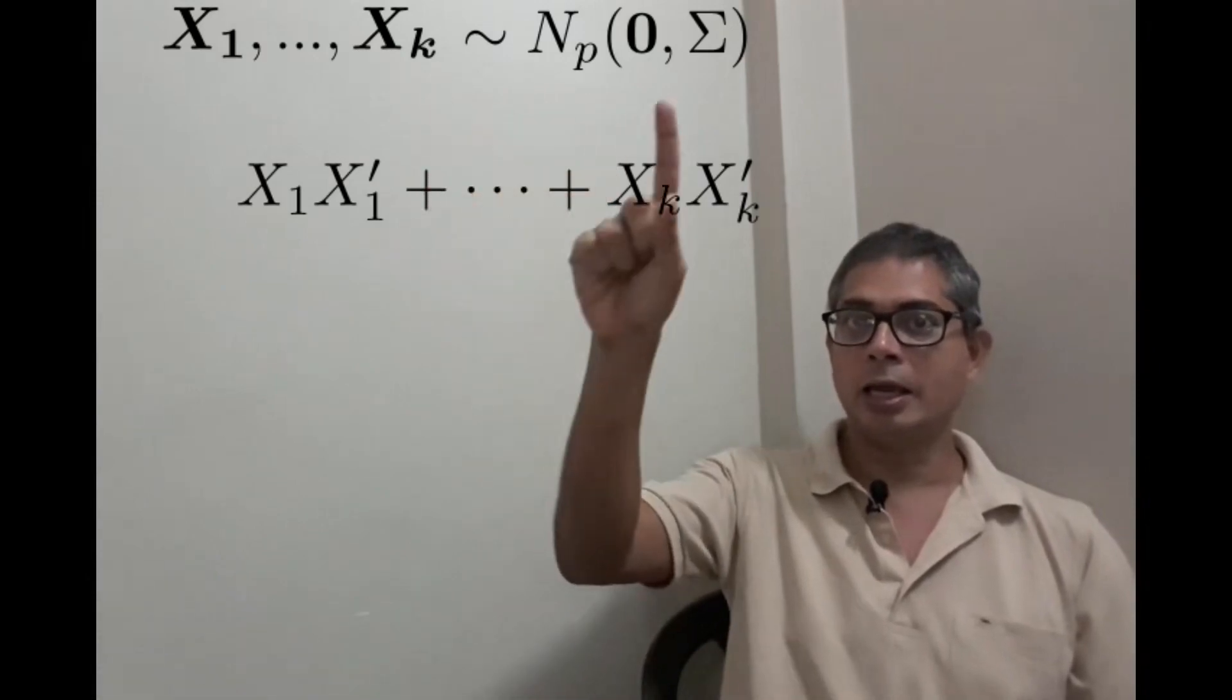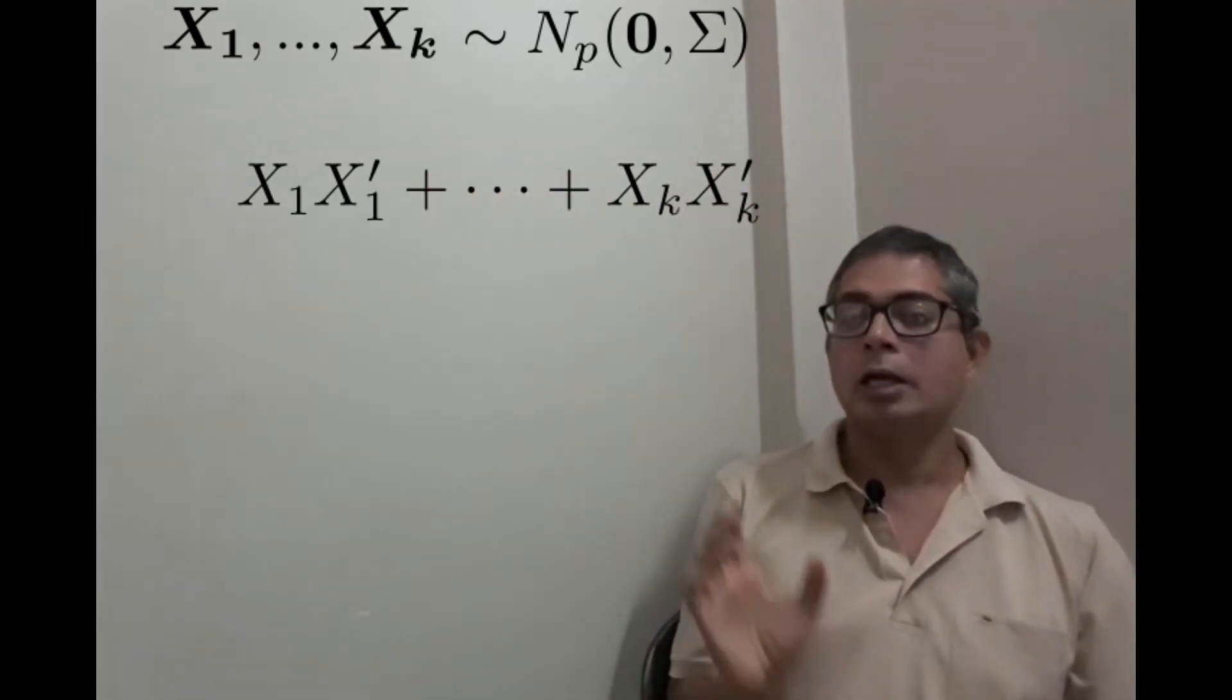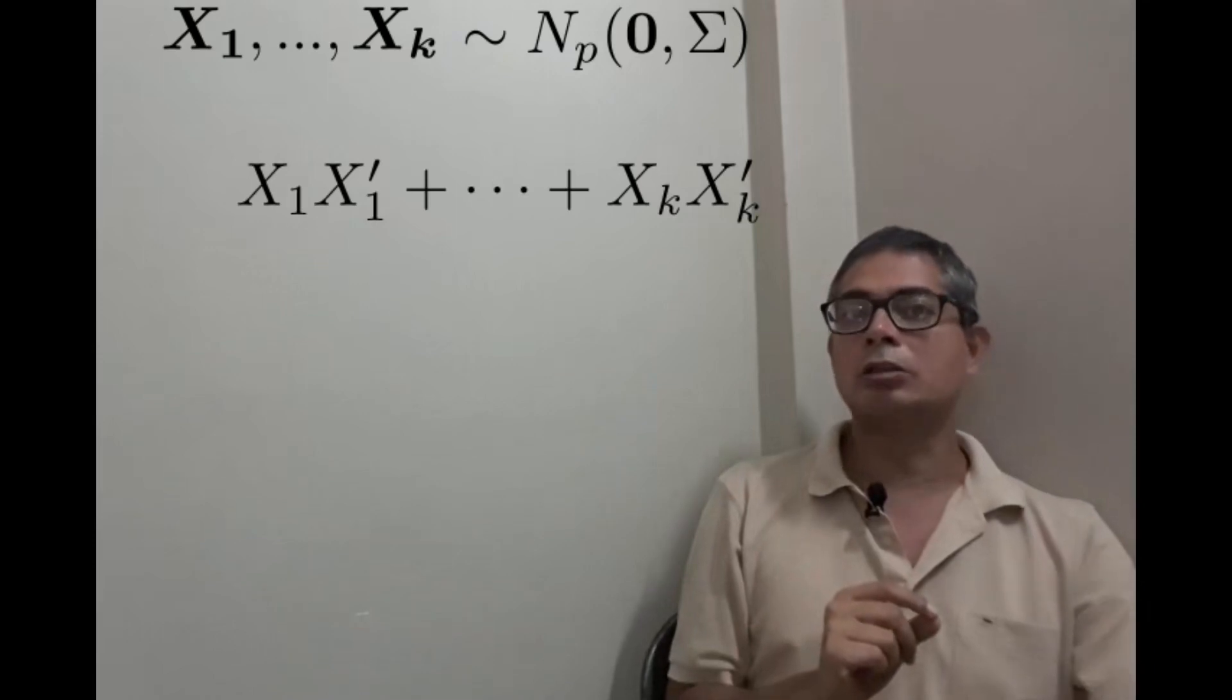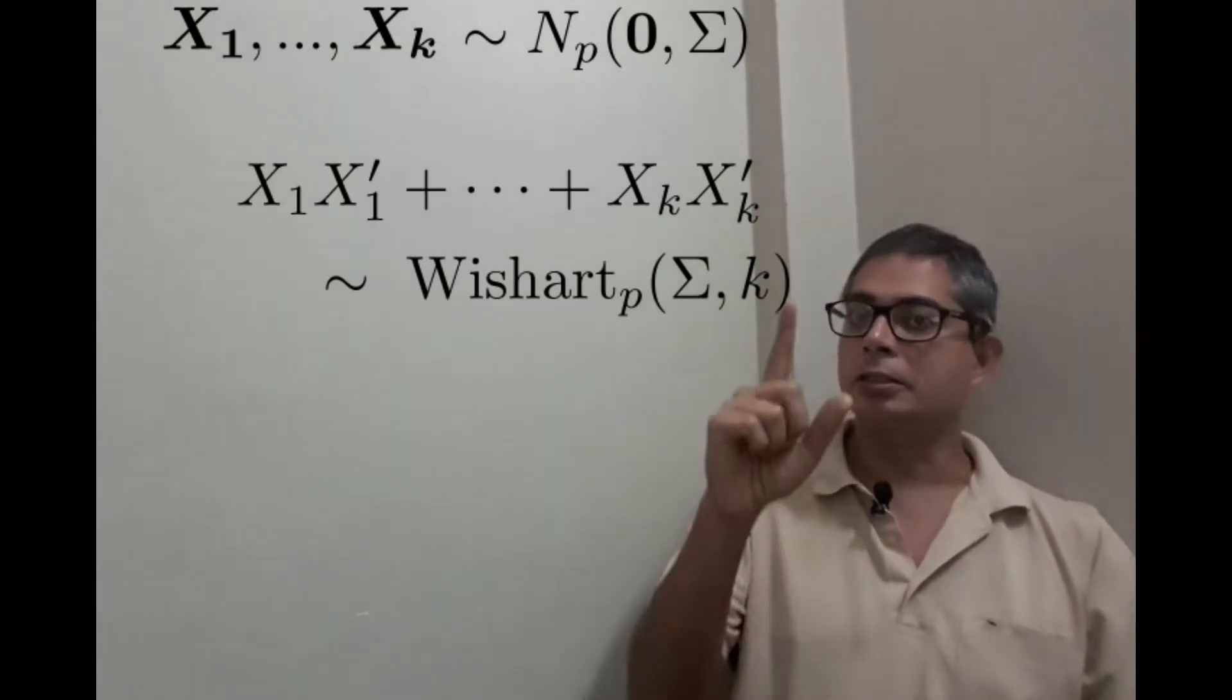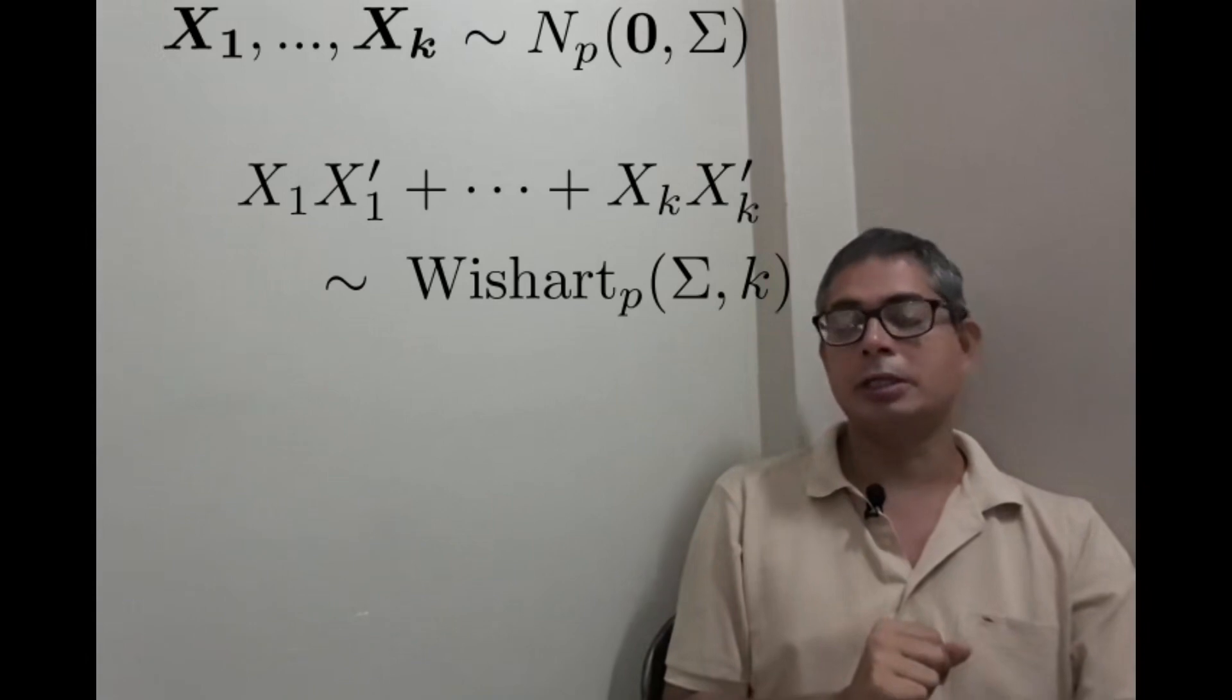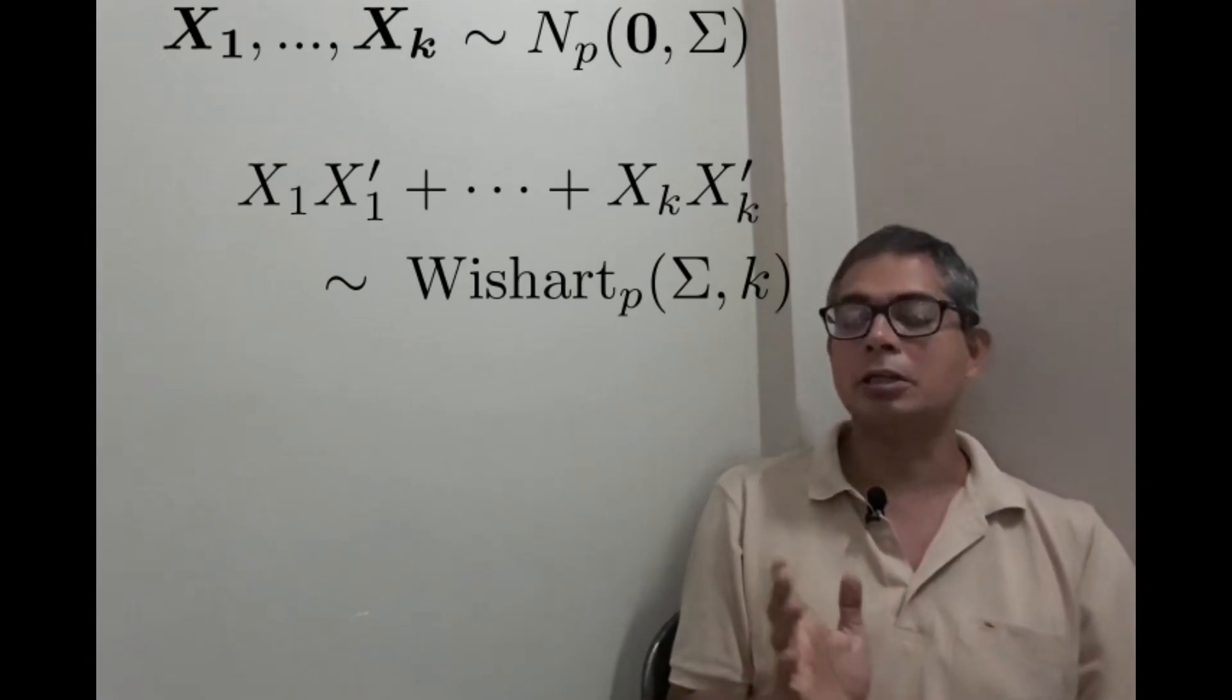This distribution is called the Wishart distribution, p-dimensional, this is Σ and this is k. And this k as usual is called its degrees of freedom.